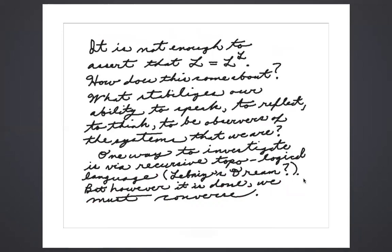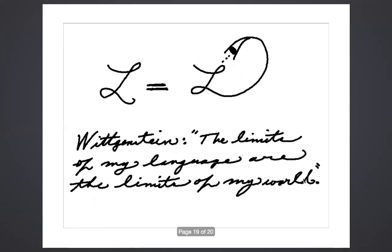It is not enough to assert that language is equal to its own meta-language. How does this come about? What stabilizes our ability to speak, to reflect, to think, to be observers of the systems that we are? One way to investigate it is via recursive topological language. Perhaps this is the beginning of Leibniz's dream of a universal formal language all over again. But however it is done, we must converse.